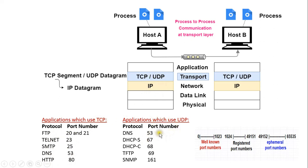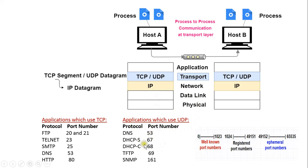The applications which use UDP at the transport layer include DNS, DHCP server, DHCP client, Trivial File Transfer Protocol (TFTP), and Simple Network Management Protocol (SNMP). DNS may use TCP or UDP at the transport layer, both with port number 53. The DHCP server application uses port number 67 and the DHCP client application uses port number 68.